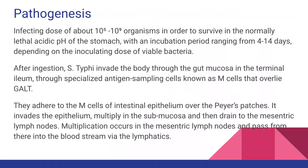After ingestion, S. typhi must first survive the gastric acidic pH — most are killed. If they survive, they invade the body through the gut mucosa in the terminal ileum, where they adhere to the M cells of the intestinal epithelium overlying the Peyer's patches and then invade the epithelium.